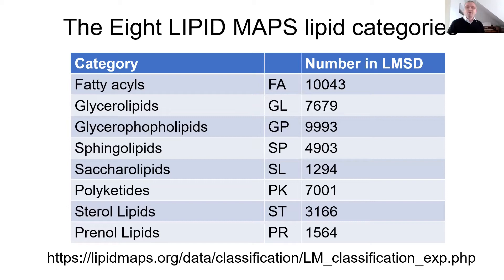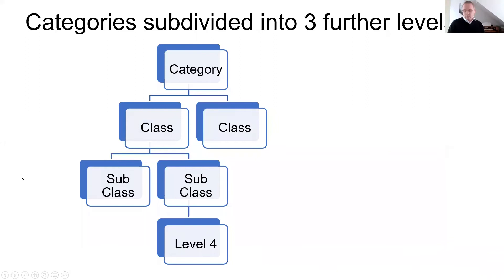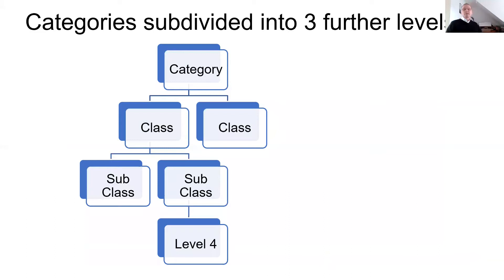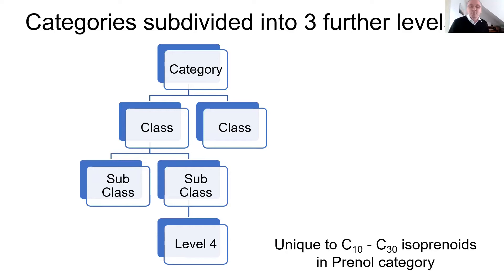For many of these lipids — the glycerolipids, glycerophospholipids — they're really all modified fatty acyls. So you can think of lipids biochemically as fatty acyls, special cases where they're added to things, polyketides and prenols. The LipidMaps classification system works such that each category is subdivided into three further levels called main classes and subclasses. In the case of the prenol lipids, unique to the C10 to C30 isoprenoids, there's a fourth level of classification because these lipids are so diverse.